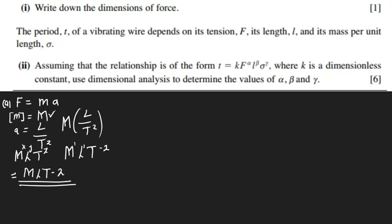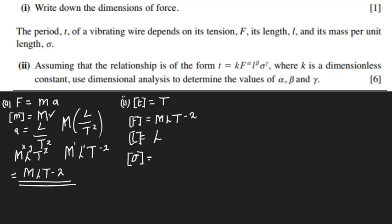Now the question says the purity of a vibrating wire. Let us write the dimensions of everything. The dimensions of T, the period, are simply big letter T. The dimensions of force F are M L T negative two. The dimensions of length are simply big letter L. The dimensions of mass per unit length are M L to the power negative one.